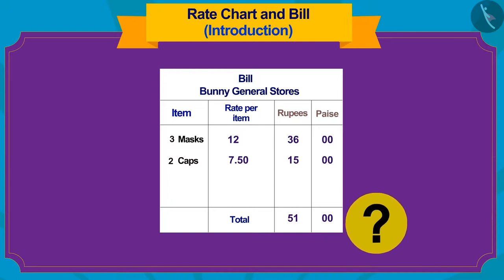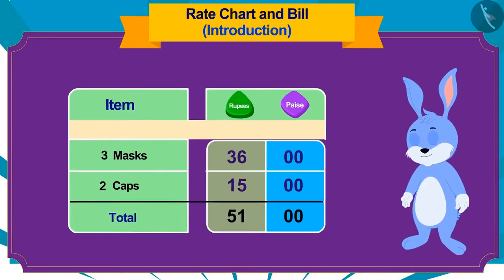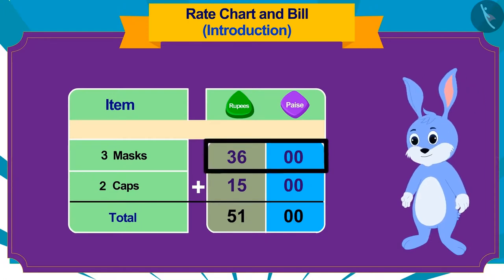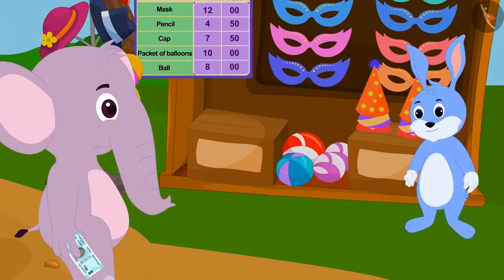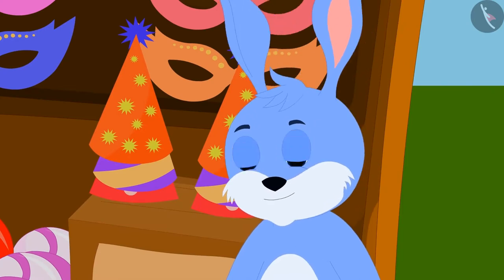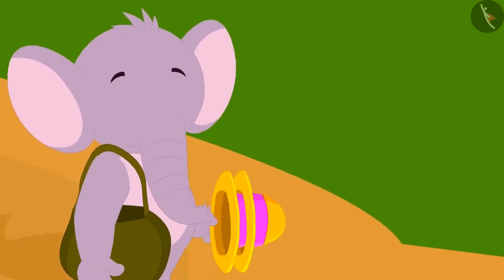Can you tell how Banni wrote this total price? To find out, Banni added the cost of three masks and two caps. If we add 15 to 36, we get 51 rupees. Banni explained the bill to Appu in exactly the same way. Now Appu gave 51 rupees to Banni and happily returned to his house with the purchased items.